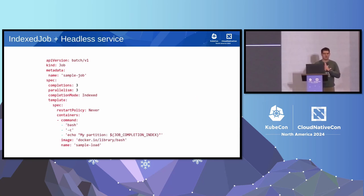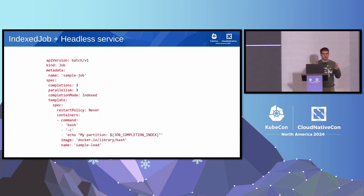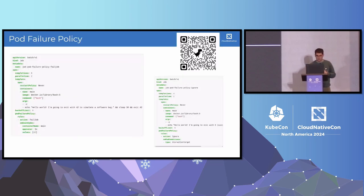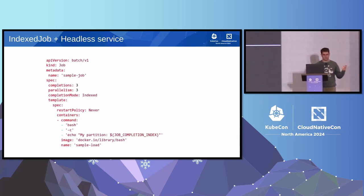One of the major problems we saw was that most folks running jobs want communication between their pods and a stable name for their pod rank. If you're running an MPI-like job, you might have a rank zero pod, and rank one and two, and you want to communicate to rank zero. This is the idea of an indexed job - you can have this feature by a completion mode called an index, and if you couple that with a headless service, you're able to get all your pods to communicate to one another.